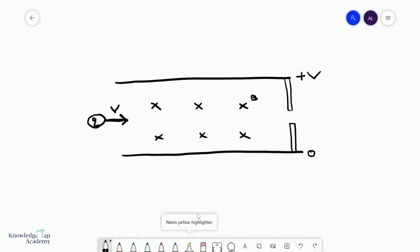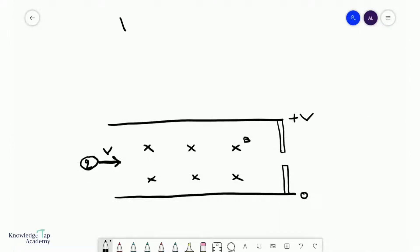In this video, we're going to understand something called a velocity selector. A velocity selector is exactly what it sounds like - it's a device that can choose